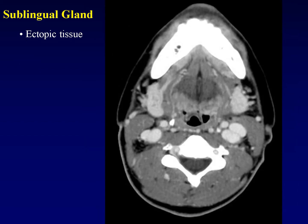The sublingual gland lies in the floor of the mouth. It is an elongated structure along the lingual surface of the mandibular body, distinguishable by its characteristic enhancement pattern, and lies almost directly on the bone. In addition to the sublingual gland, ectopic foci of tissue may appear anywhere along the line between the submandibular and sublingual glands. These ectopic areas are considered normal and should not be mistaken for pathologic masses.